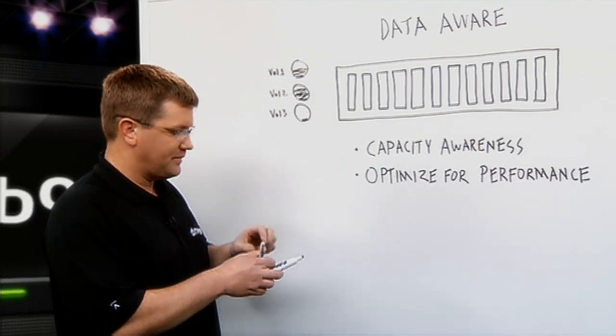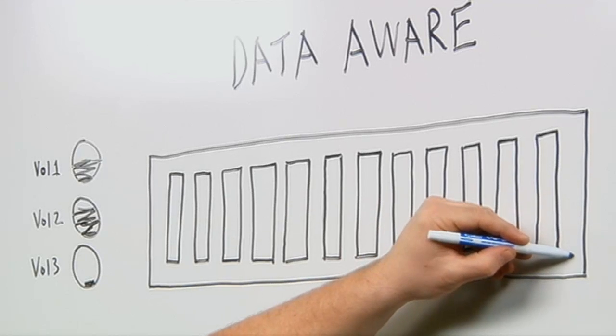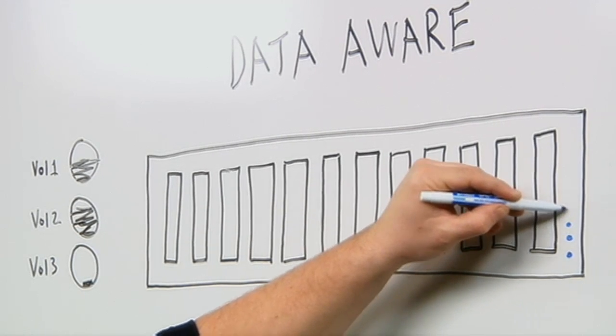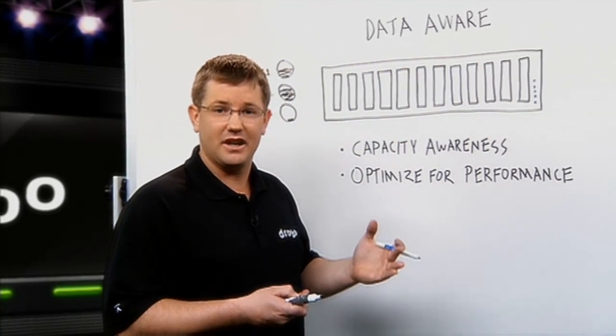Drobo aggregates that capacity and presents it to you in the form of a capacity gauge on the front of the array. For example, if there are five lights lit up on the array, each light represents 10% capacity full, so that's 50% of the available capacity utilized.